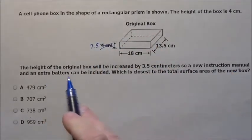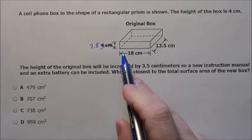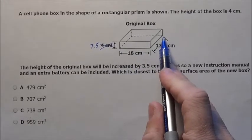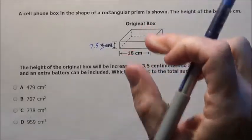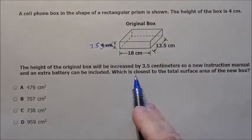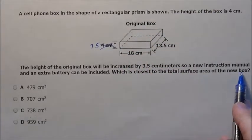So that you can add a new instruction manual and extra battery. The box 18 and 13.5 cm aren't going to be changed. It's just the height of the box is going to go up. So which is closest to the total surface area of the new box?